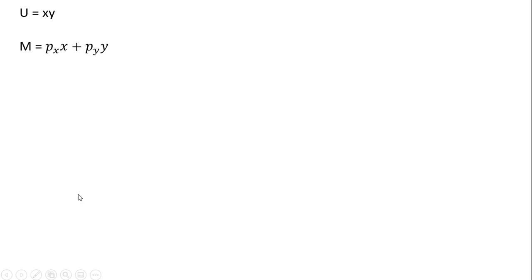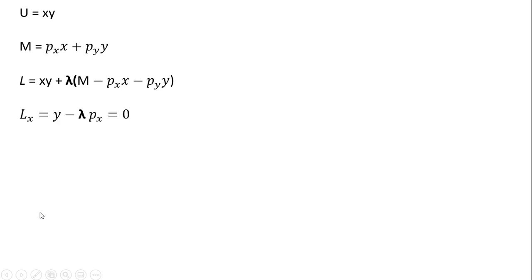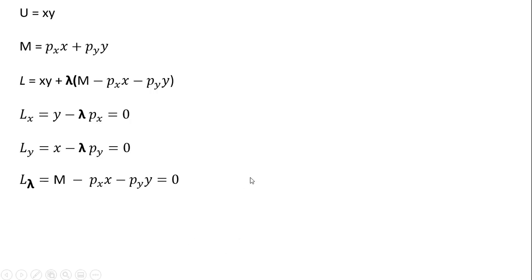Let's show this numerically. We've got our utility function and our constraint. We're going to form the Lagrangian and take three partial derivatives of the Lagrangian: with respect to good x, with respect to good y, and finally with respect to lambda. We're maximizing by setting all the partials equal to zero.